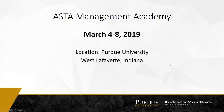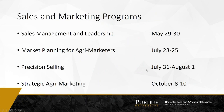We have four programs in the sales and marketing area. Sales management and leadership is for those leading a sales team, happening May 29th and 30th in West Lafayette — a great opportunity to interact with Scott Downey, who has updated the book on agricultural sales and has tips for setting goals and managing people in sales roles. We also have precision selling, specifically for frontline salespeople, thinking about how you work with key accounts, build relationships, enhance trust, and deliver on a mutually beneficial partnership. That happens at the end of July, beginning of August.